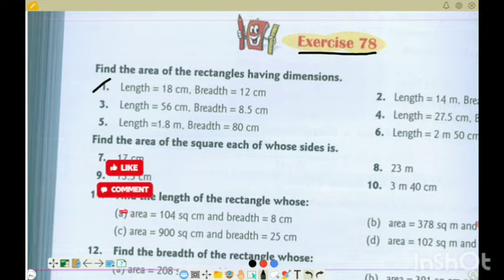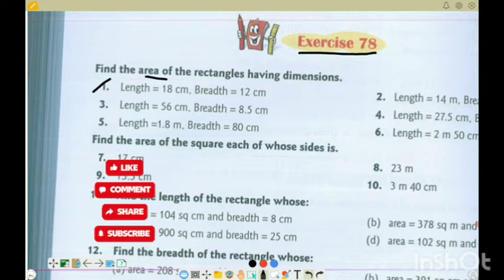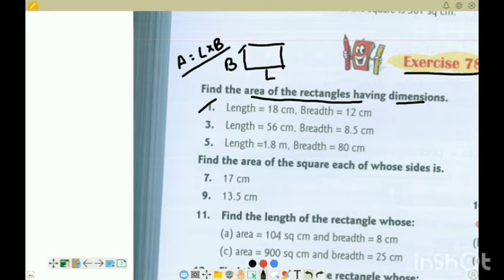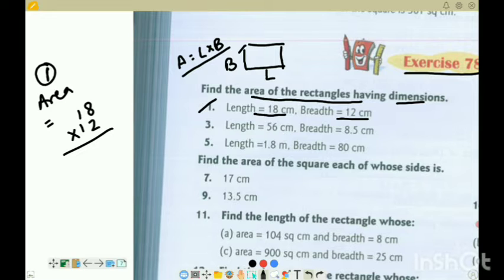Let's start with exercise 78 question 1. Find the area of rectangles. The area formula for a rectangle: area is equal to length into breadth. Length multiplied by breadth.